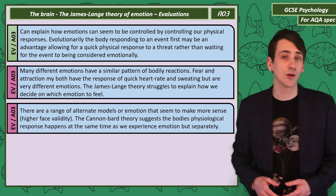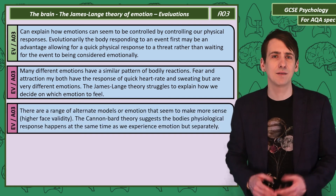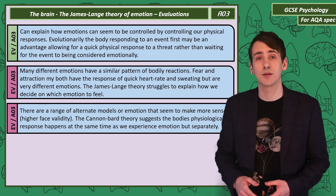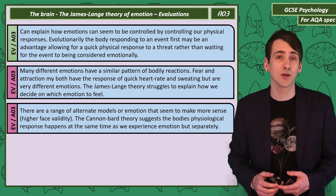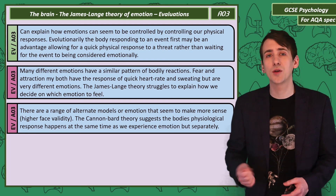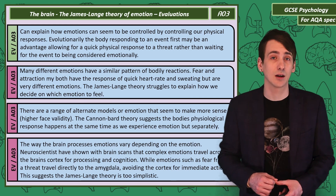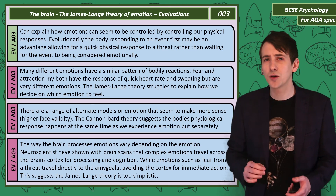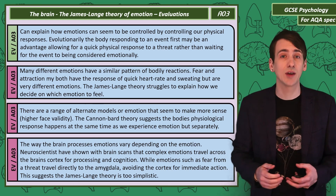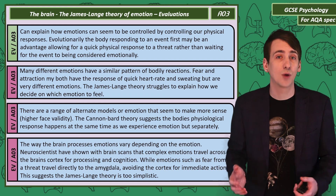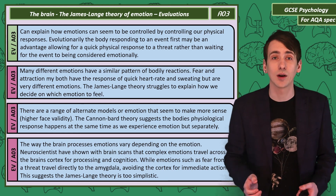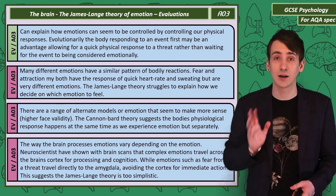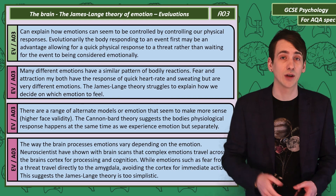There are also a wide range of other models of emotion that seem to have higher face validity — they seem to make more sense. The Cannon-Bard theory, for example, suggests that the physical and emotional response happen at the same time but separately. Also, the James-Lange theory is simplistic, treating all emotions as a result of interpreting biological responses. Neuroscience research suggests that different emotions are processed in very different ways. Brain scans show that complex emotions are processed slowly and deeply across the brain, while simple emotions like fear travel directly to the amygdala, avoiding the cortex for a quick response.